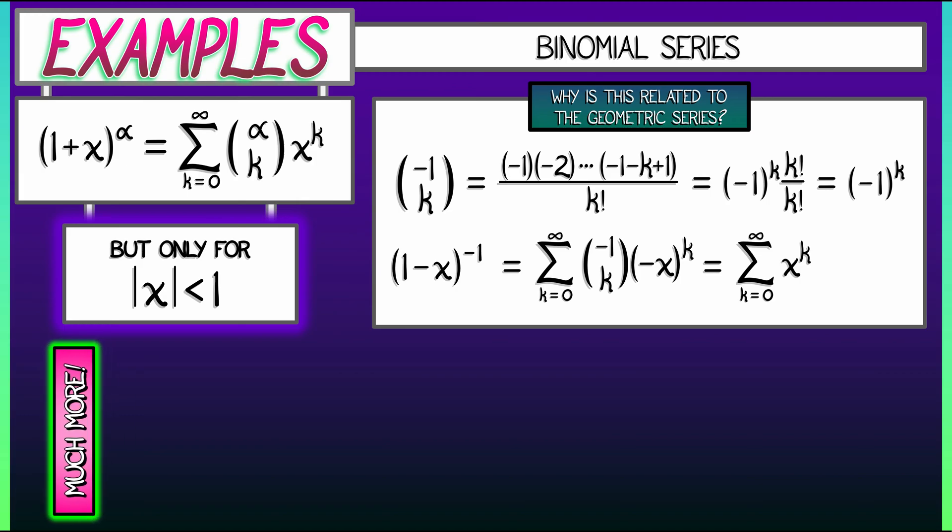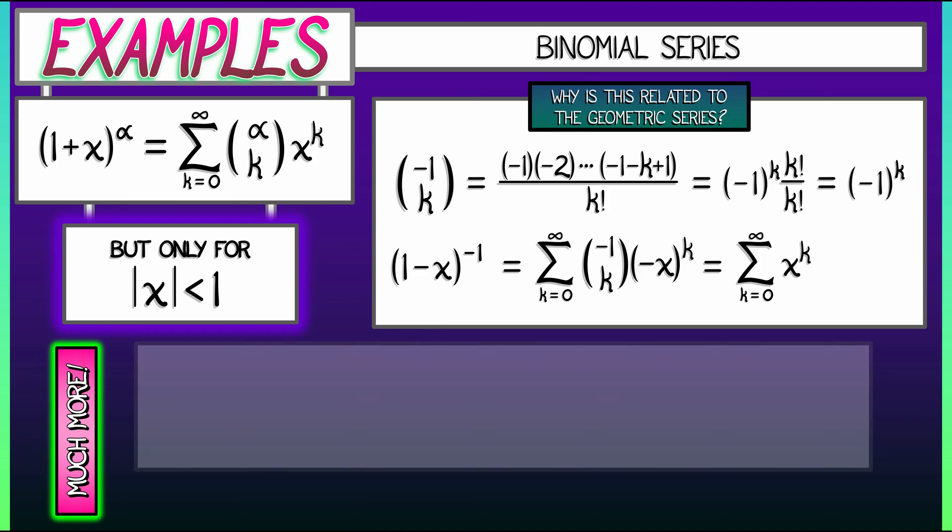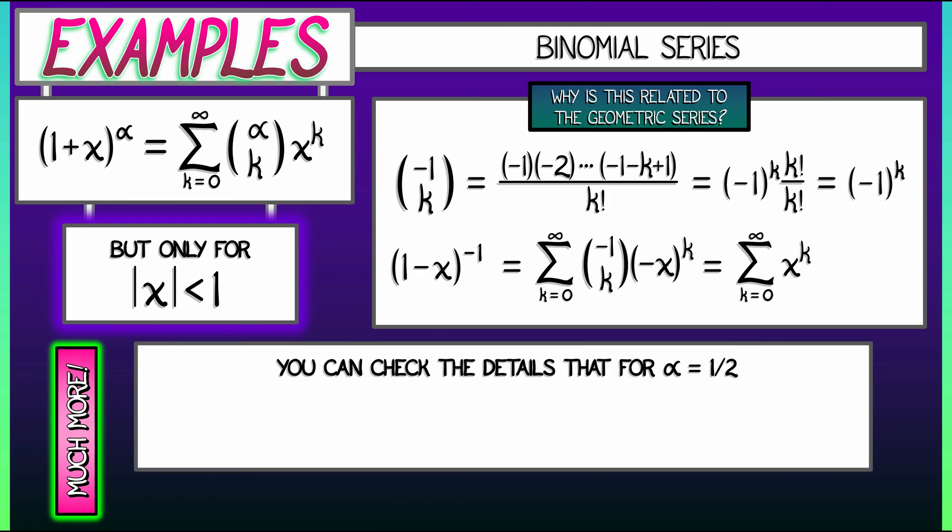There is so much more that you can do with this series. Any value of alpha is giving you a really cool series. You can check that when we choose alpha equal to a half, then quantity 1 plus x to the 1 half, that is square root of 1 plus x, becomes, using the binomial series,